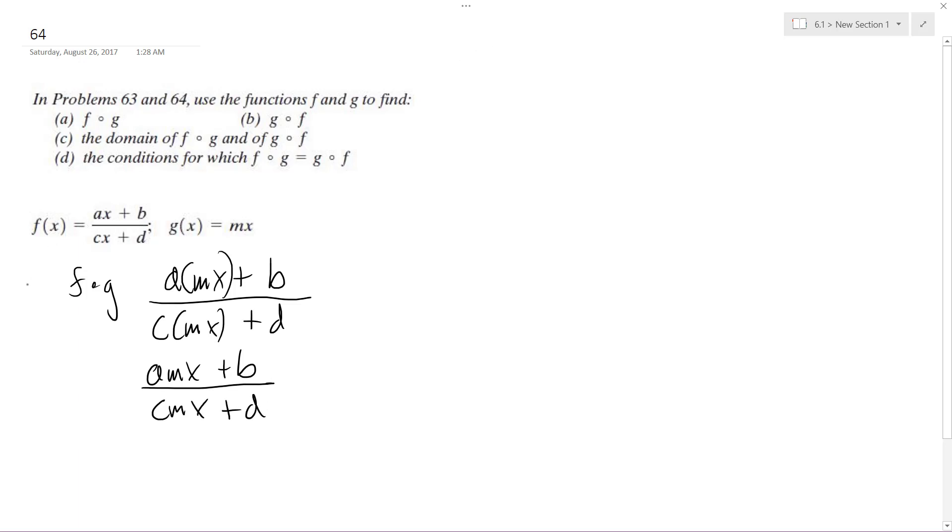Now for part b, I want to find g of f. Where I have m, I'm going to plug in this whole equation: ax plus b over cx plus d. The only difference here is the m, which is the coefficient in g of x, is going to be multiplied across the top. So I get m times ax, which is amx. I'm going to be consistent about my variable order just so I know like terms. So then plus mb all over cx plus d.